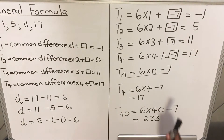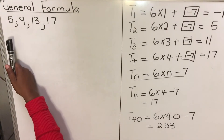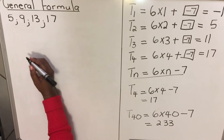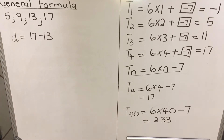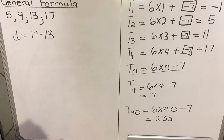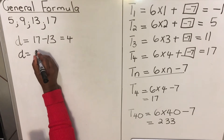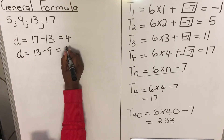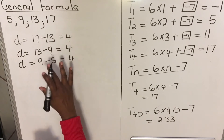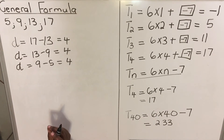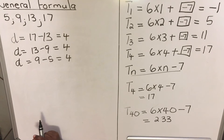Let's look at another example: 5, 9, 13, 17. First, find the common difference. d = 17 minus 13 = 4. d = 13 minus 9 = 4. d = 9 minus 5 = 4. It's important to go through this step to confirm the common difference. We're subtracting and it's common — it's 4 every time.